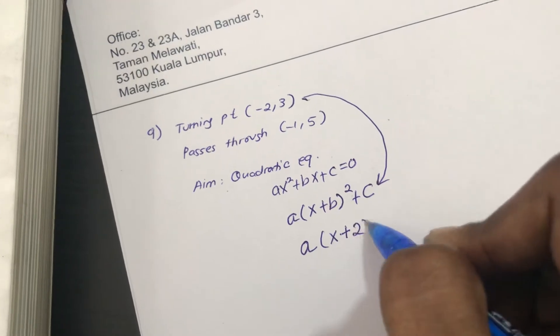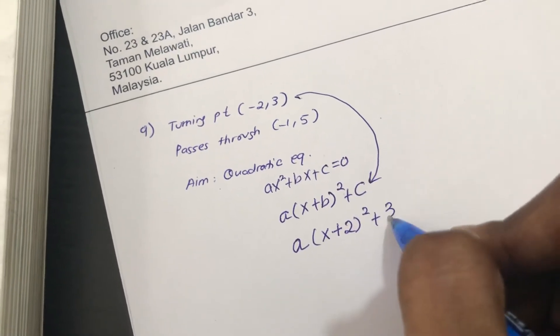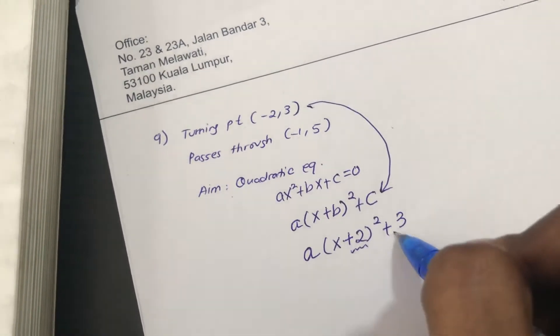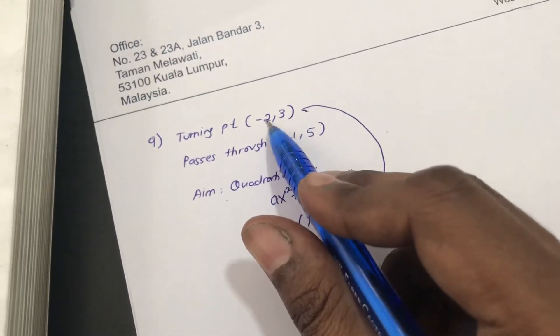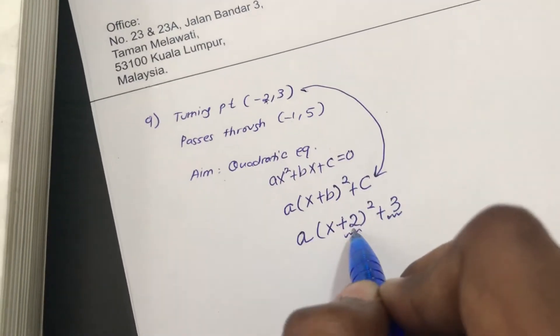Okay, a(x + 2)² + 3. See, usually you will have this and then you will be able to write the turning point. But now, if they give this, then you should be able to do the reverse way.